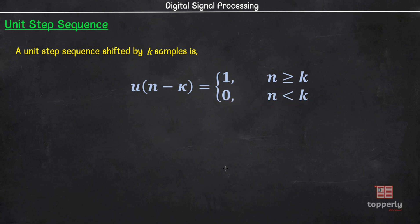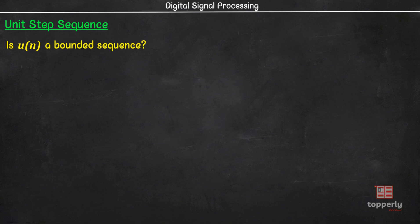Now let us see if u(n) is a bounded sequence. As you can see, all the samples have a value of 1. So Bx = 1, which is less than infinity, and therefore u(n) is a bounded sequence.